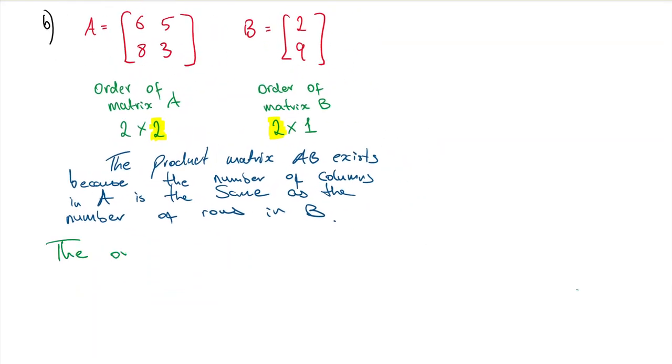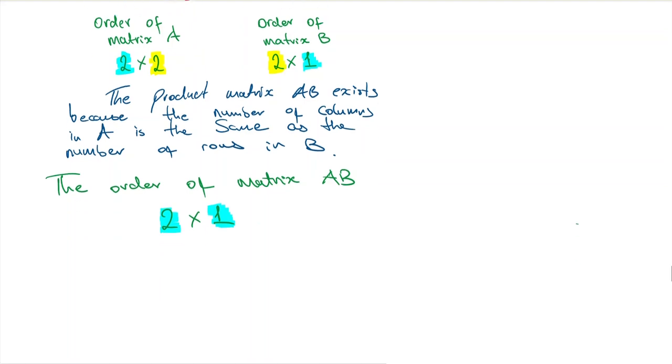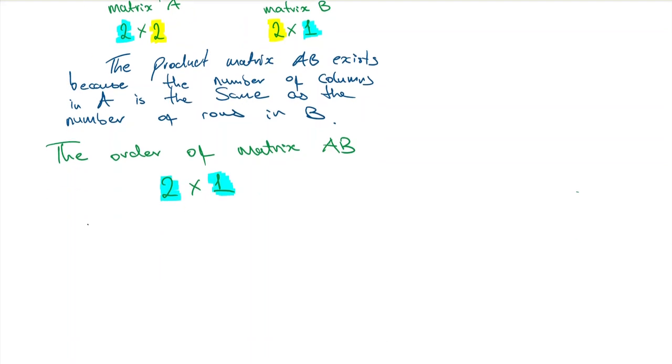The order of matrix AB is then 2 by 1. I can solve it, so I've got AB is equal to—I know it's going to have two rows and one column, so I'll have AB₁₁, AB₂₁.